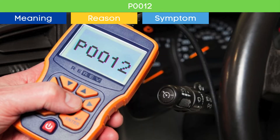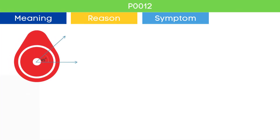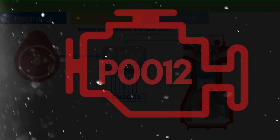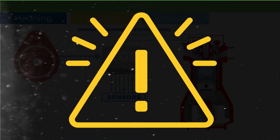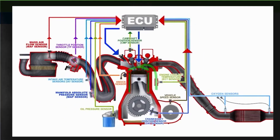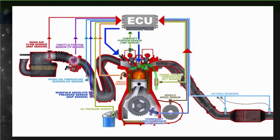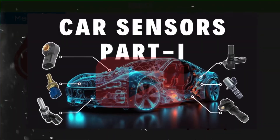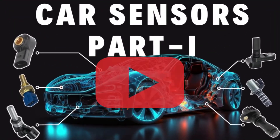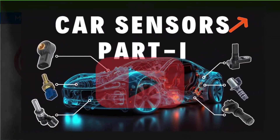Now that we know what the P0012 OBD-II code is, let's dive into the symptoms of P0012. Cam angle is a very crucial parameter in engine management systems to optimize the engine's performance. The ECU also relies on other EMS sensor inputs. To learn more about sensors of the engine management system, you can check our detailed video on car EMS sensors — check the link in the corner.